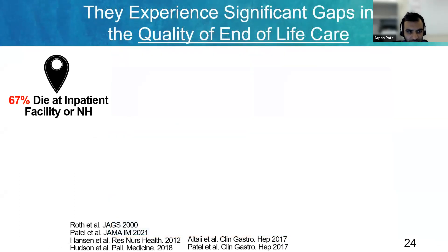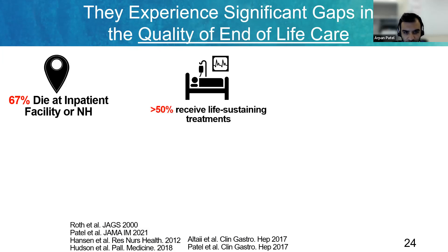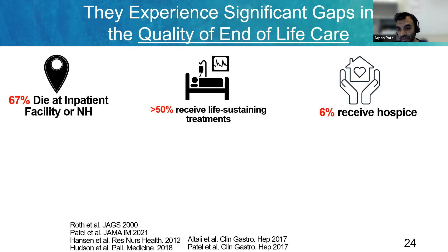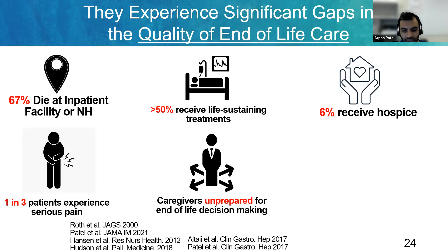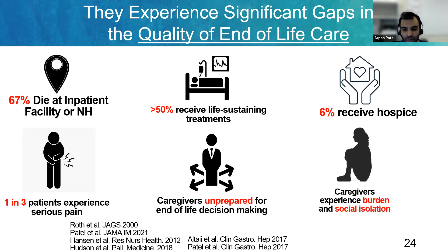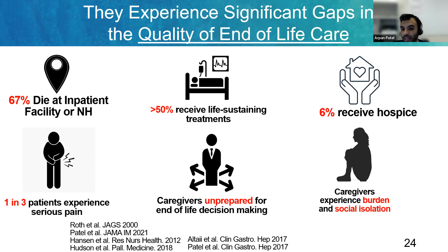I want to highlight some specific issues at the end of life. Two-thirds of patients with decompensated cirrhosis die in an inpatient facility or nursing home. Over half receive some form of life-sustaining treatment, whether dialysis or mechanical intervention. Only 6% receive hospice — compared to over 50% of patients with advanced cancer. One in three patients experience pain. Caregivers are notably unprepared for end-of-life decision making and experience significant burden and isolation. When a high MELD patient coming into the hospital doesn't end up getting transplanted, they're really looking at a very poor end-of-life quality — and that's something we can help with.